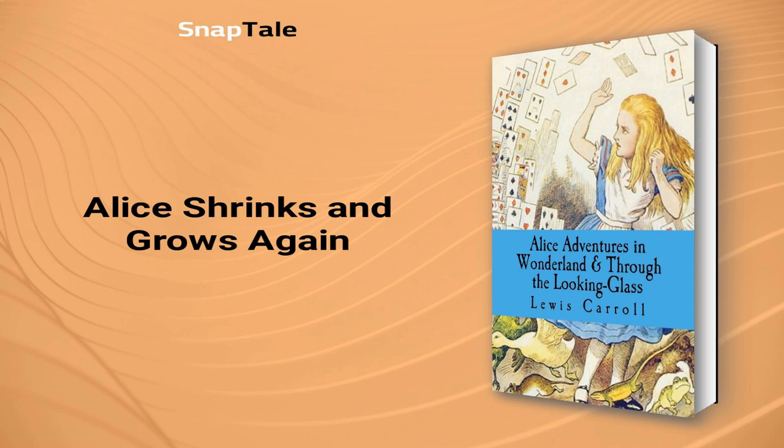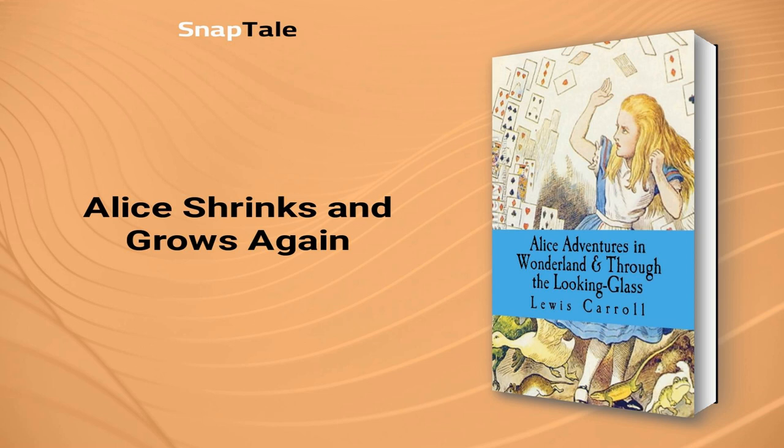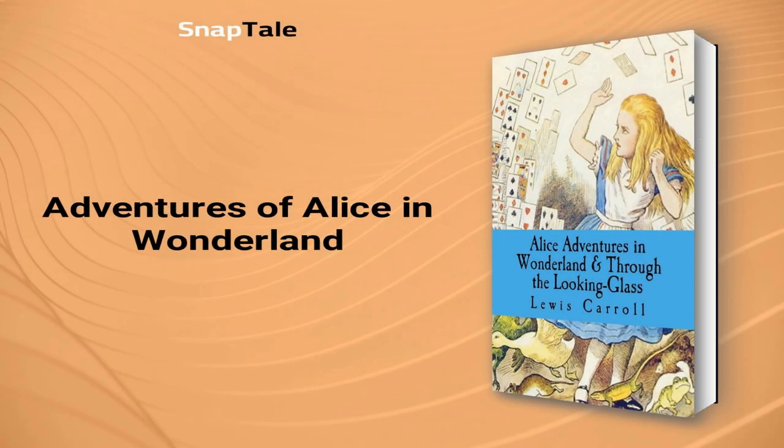Alice shrinks after eating a cake, frees herself, and meets the Caterpillar on a mushroom. She had stumbled upon a small house while searching for the rabbit's gloves. After the rabbit threatens to burn the house down, Alice counters with a threat about her cat Dinah. The rabbit throws pebbles that turn into cakes, and after eating one, Alice begins shrinking again and escapes into the woods, where she meets the Caterpillar smoking on a mushroom.